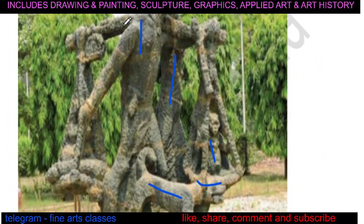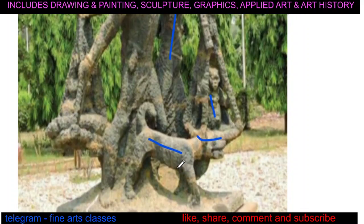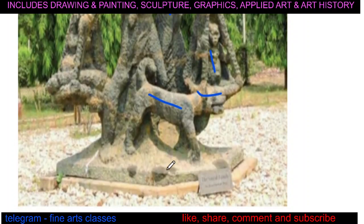So this is the second sculpture — a man, a woman carrying belongings on her head, a child, and their dog. The title 'Santhal Family' is written on it.